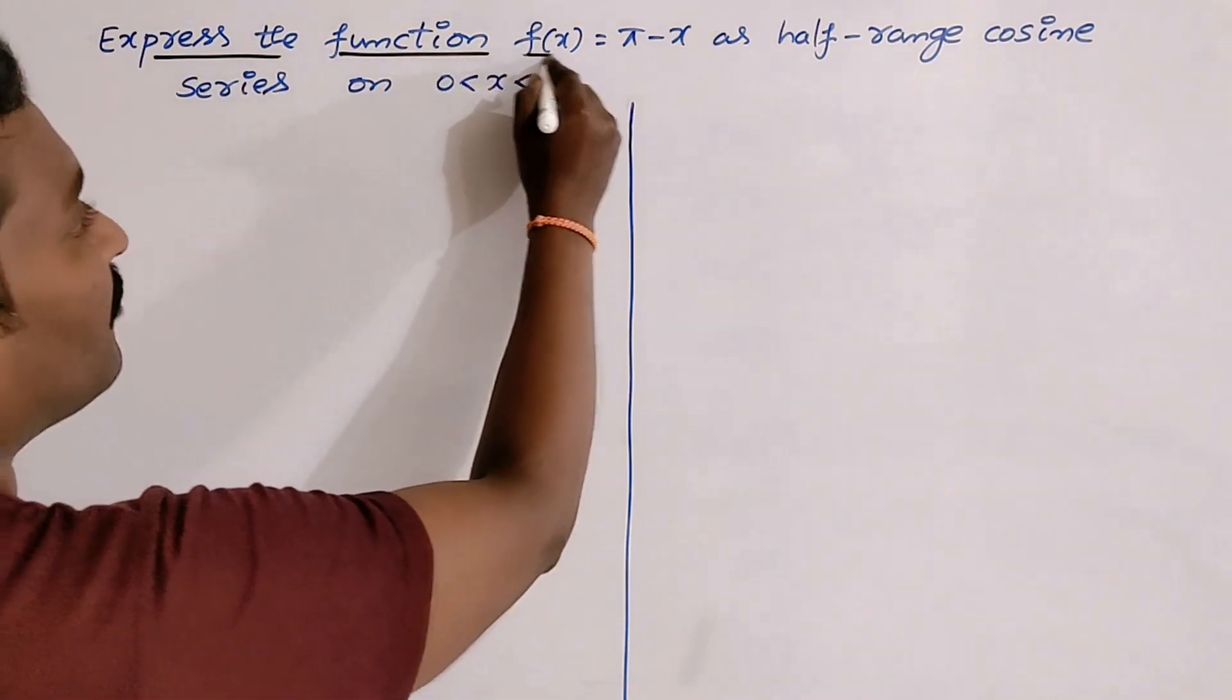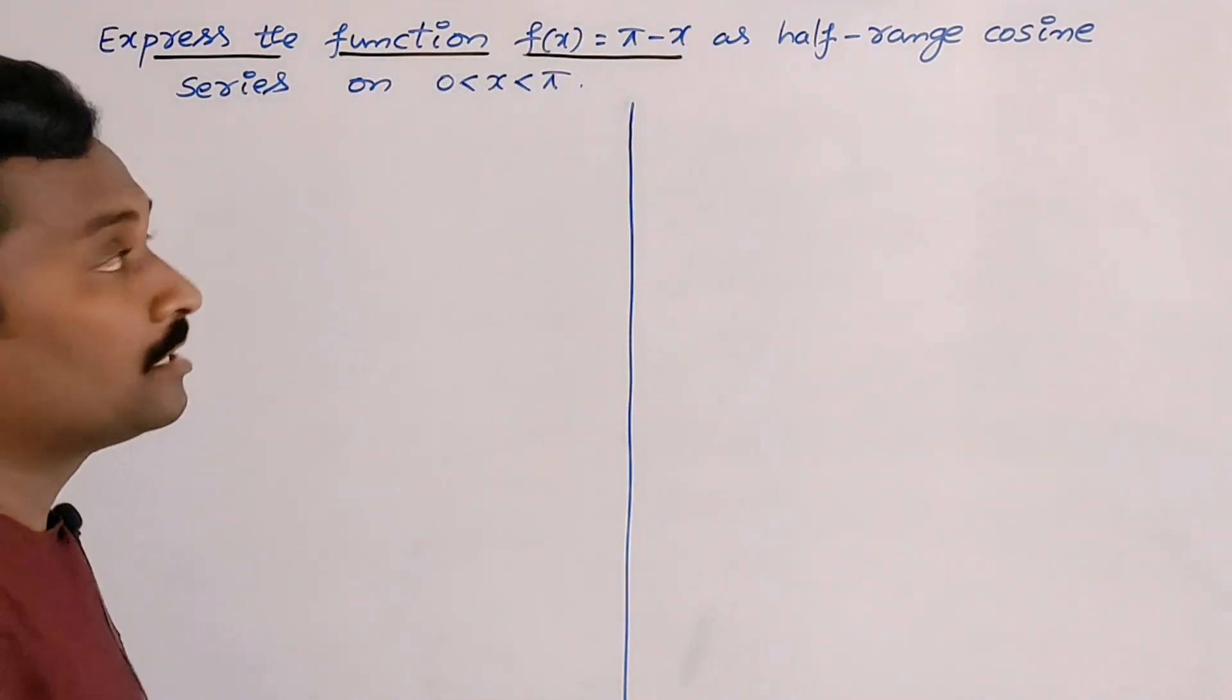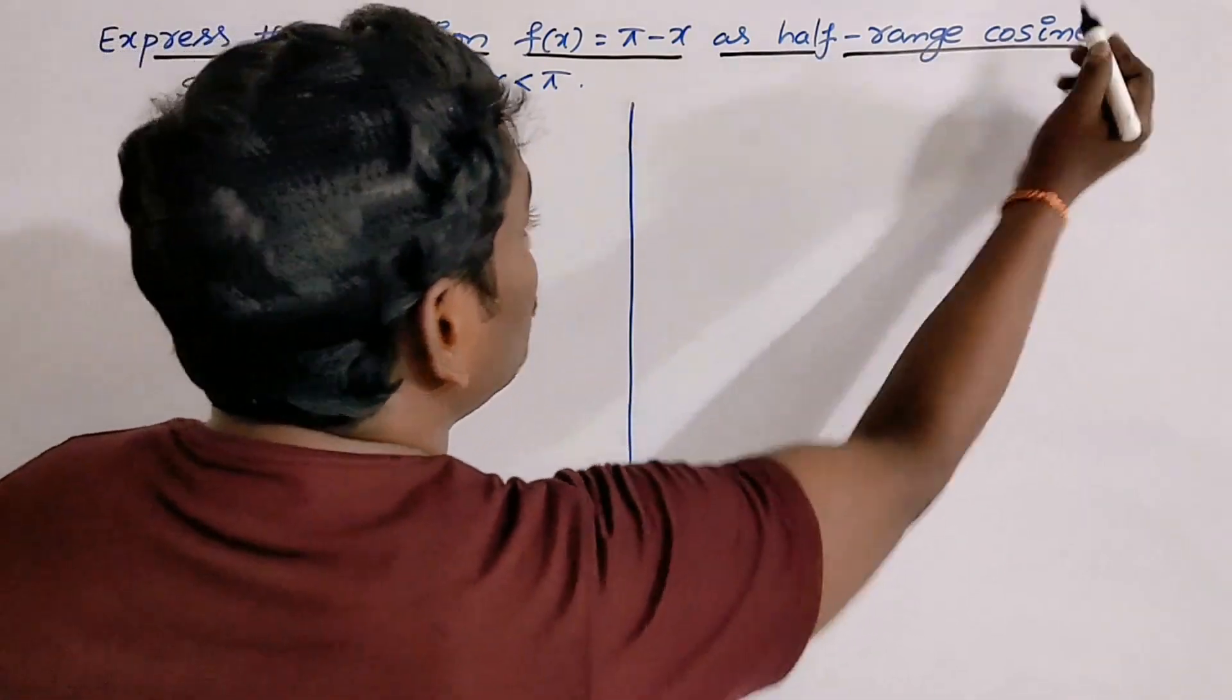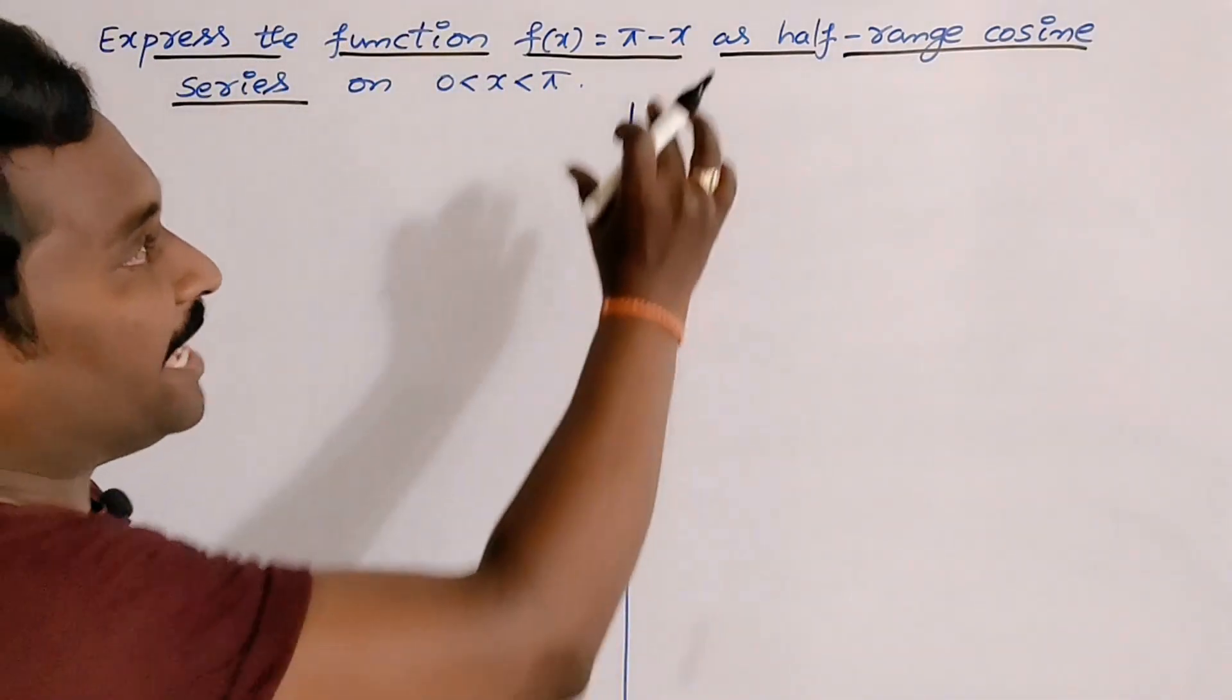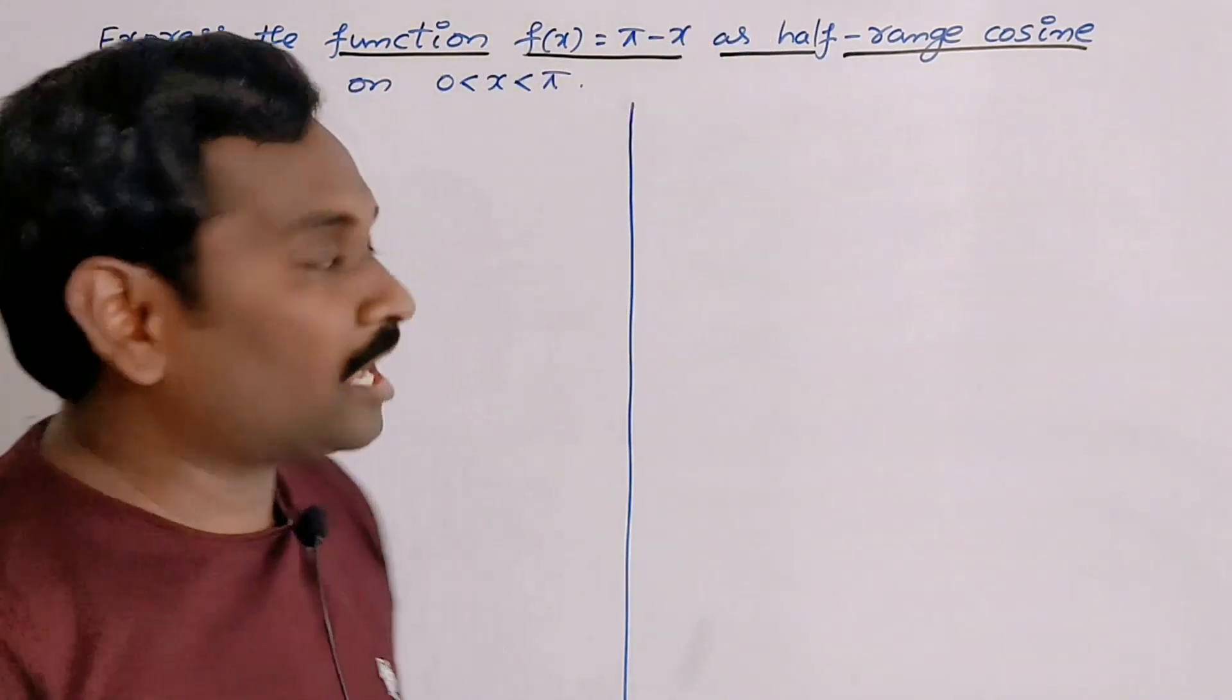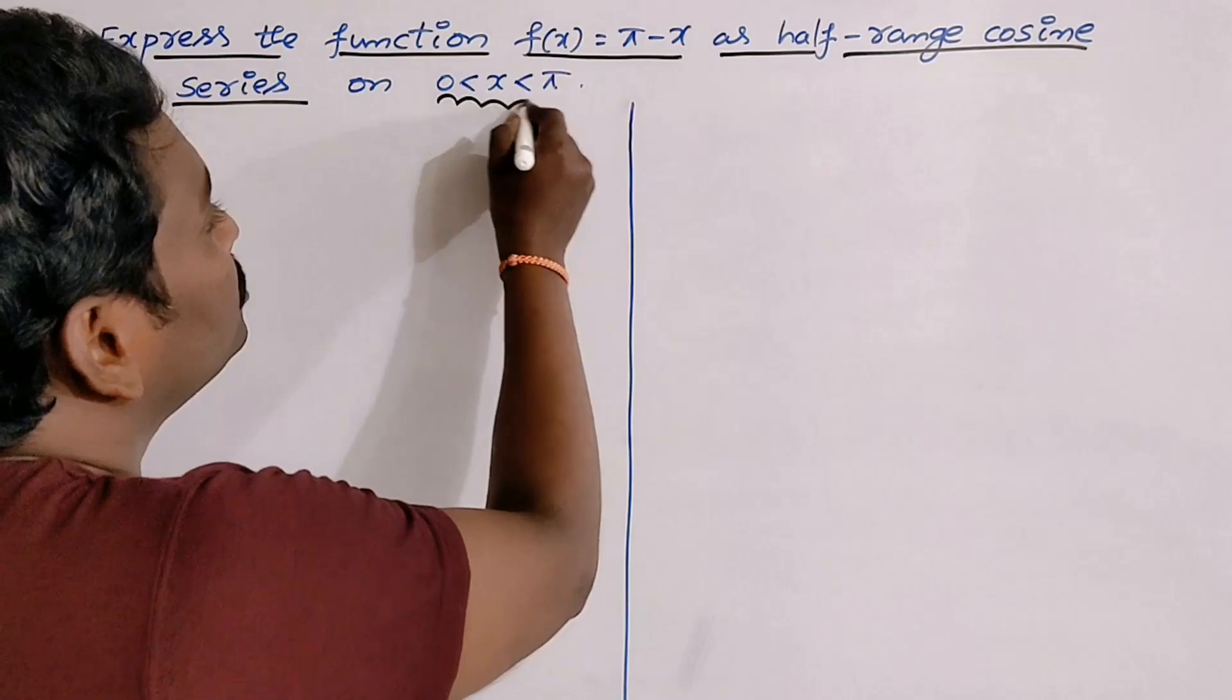Express the function f(x) = π - x, as half-range cosine series. We have to express this π - x as a cosine series only on the interval 0 to π.